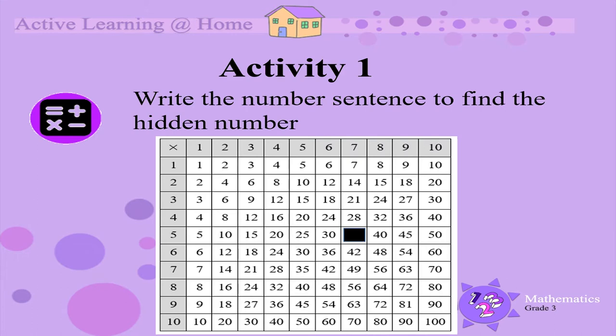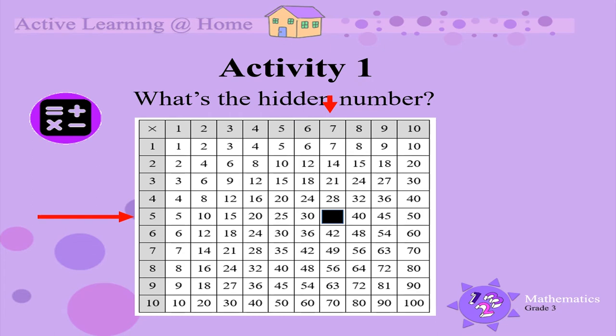The hidden number is in the row labelled 5 and it's in the column labelled 7. So we can find the hidden number using this number sentence: 5 times 7. And 5 times 7 equals 35.